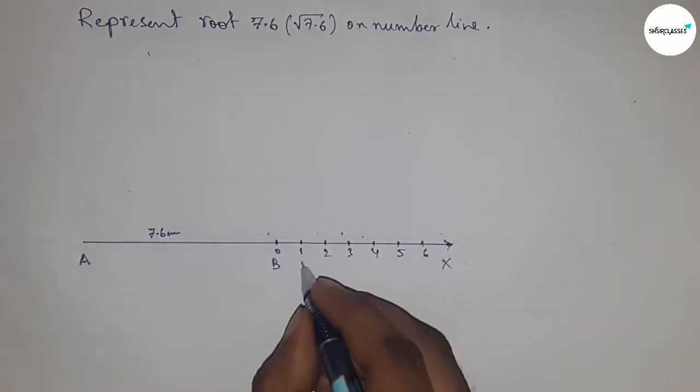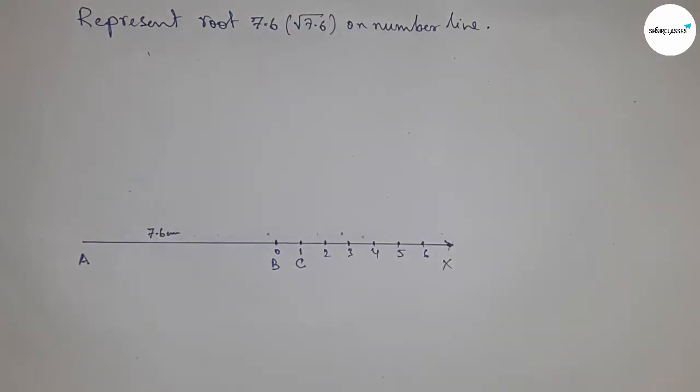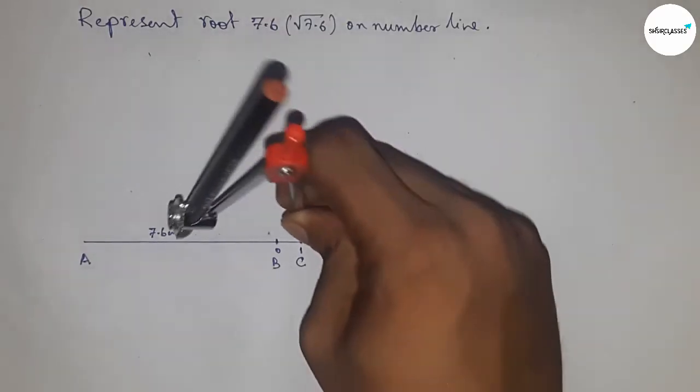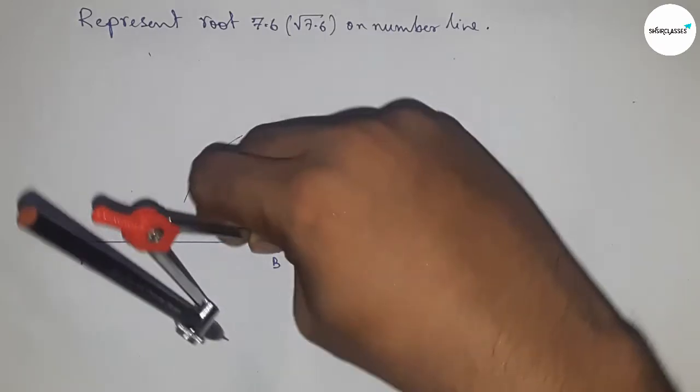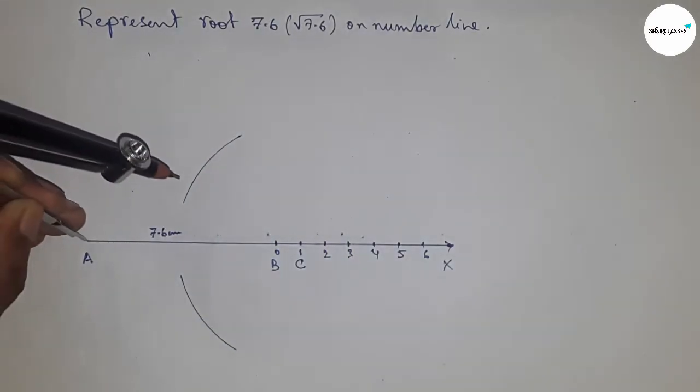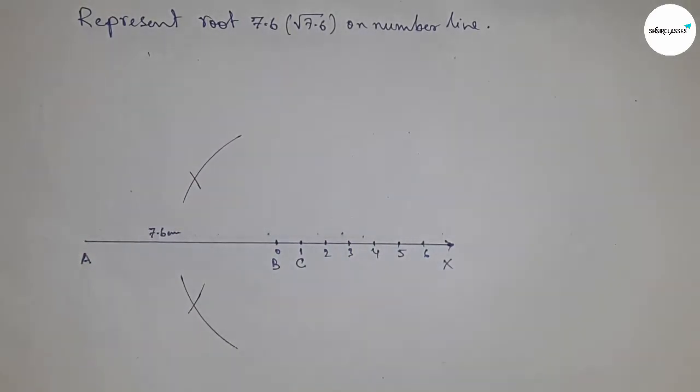Take this as point C. Next, bisect the line AC by taking greater than half of AC and drawing an arc with the same length, then put the compass here and cut the arc.